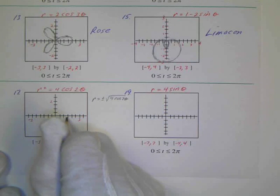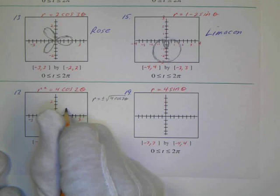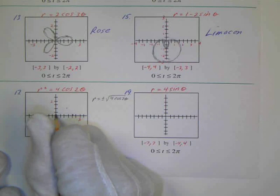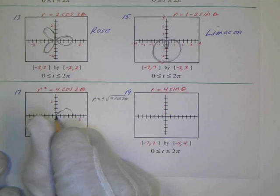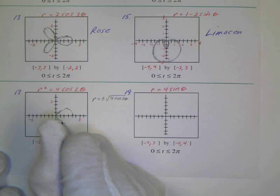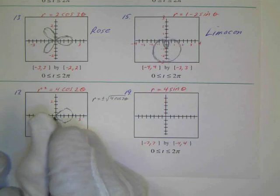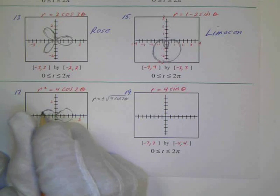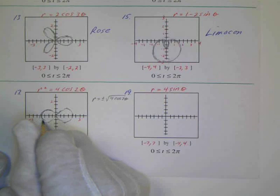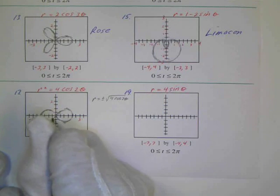So it goes out to about 2, so this is 1, 2 using this scale, and it goes, just crosses, it goes up to about 1. So let's do that. Okay.